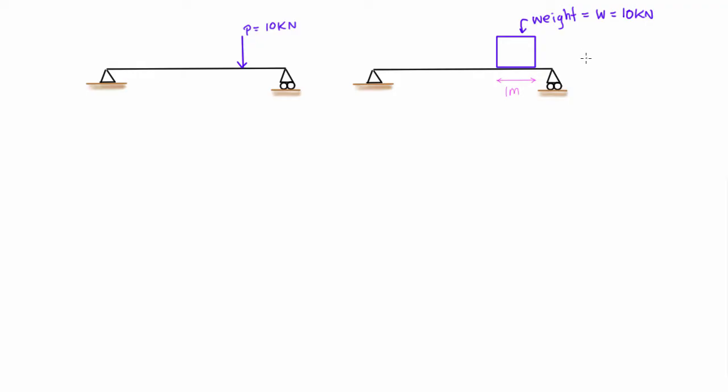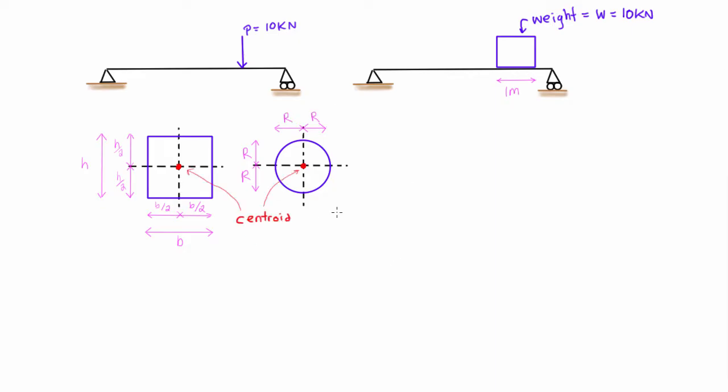So for simple shapes like squares and circles which are symmetrical about two axes, their centroid is right at the center of the shape or at the intersection of those two axes of symmetry.